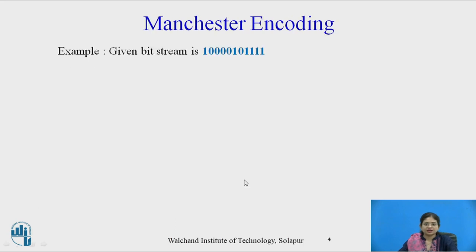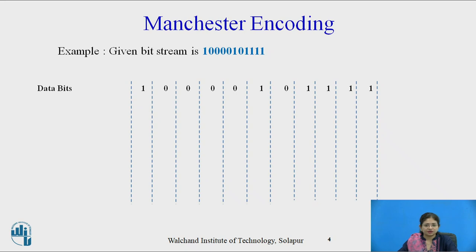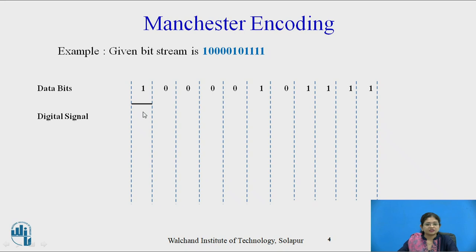Let me explain with an example. The given bit stream is: one, four zeros, one, zero, and four ones — that is 1 0 0 0 0 1 0 1 1 1 1. The data bits are arranged in intervals. To convert this data into a digital signal, one means high signal and zero means low signal. To transmit the data in a continuous manner we connect the intervals.